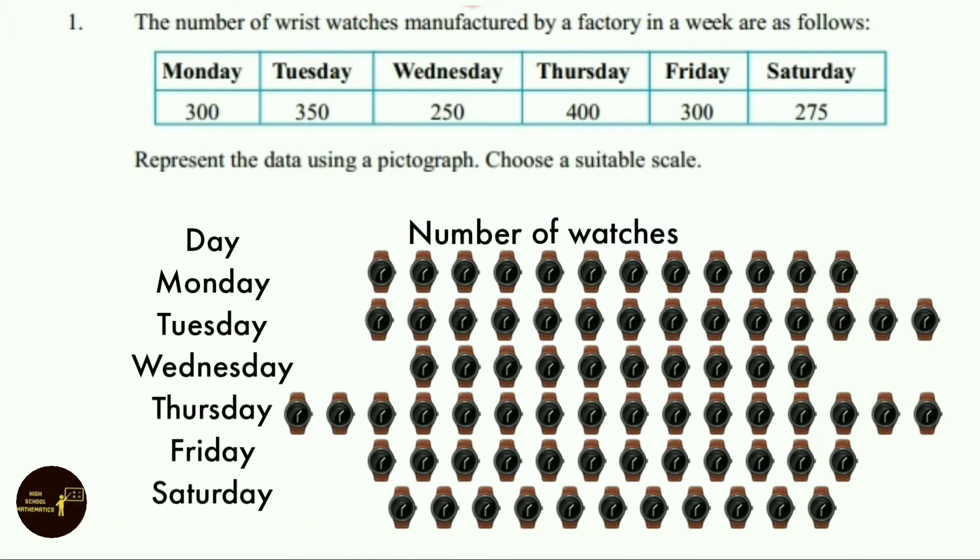Now let us see the pictograph. On Monday 300 wristwatches were manufactured, so we represented with 12 watch symbols. On Tuesday 350 watches were manufactured, so we represented with 14 watch symbols. On Wednesday 250 watches were manufactured, so we represented with 10 watch symbols.